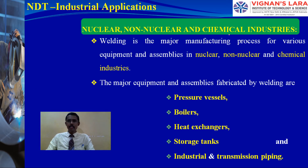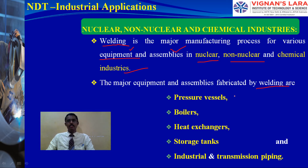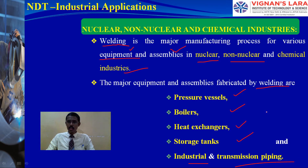Welding is a major manufacturing process for various equipment and assemblies in nuclear, non-nuclear, and chemical industries. The major equipment and assemblies fabricated by welding include pressure vessels, boilers, heat exchangers, storage tanks, and industrial transmission piping. All these things are related to nuclear, non-nuclear, and chemical industries.